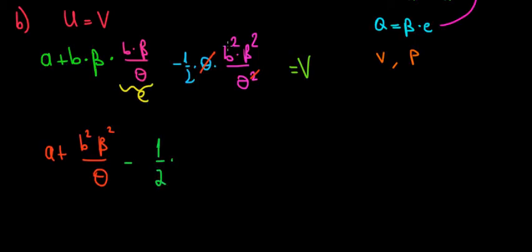And now on the other side in the next term, minus one-half times B squared beta squared divided by theta only, because one theta with the other theta cancels out. And this must equal to the alternative utility of V.